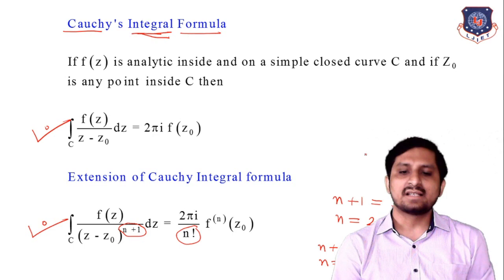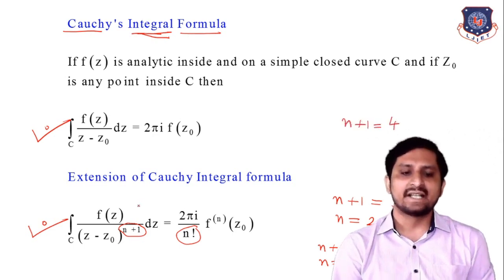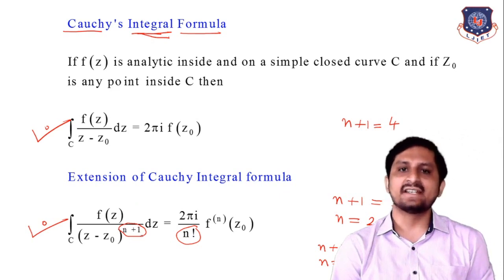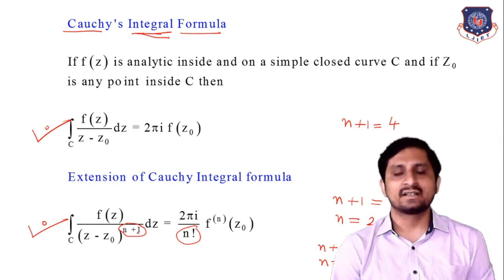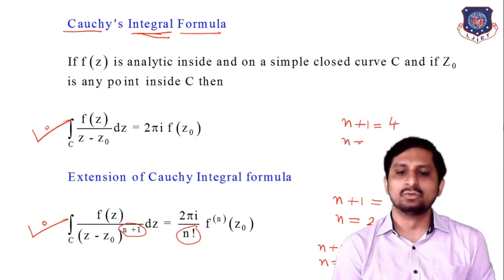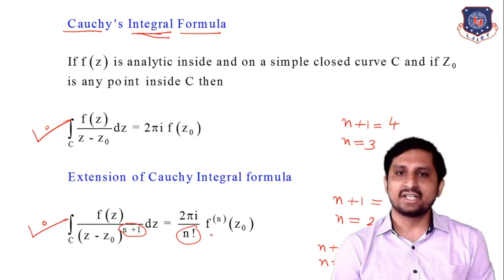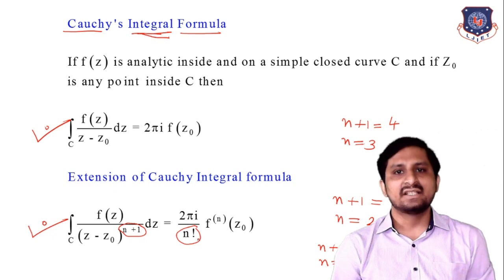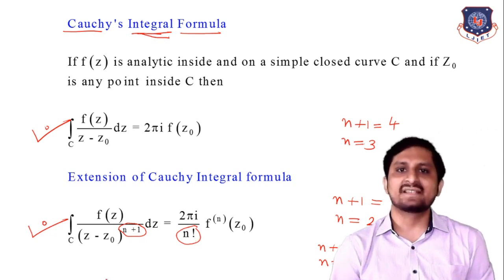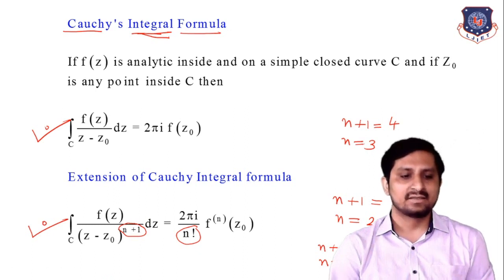That means, suppose n plus 1 equals 4. That means the degree of (z minus z₀) in the denominator is 4, so n is equal to 3. That is why you have to write 3 factorial on the right-hand side in the denominator and find out the third derivative of the function at point z₀. So let us solve this type of example.